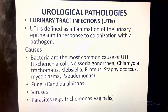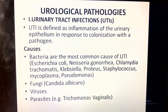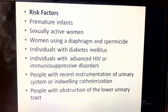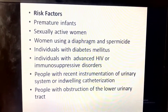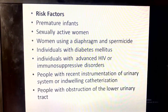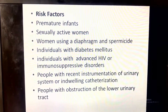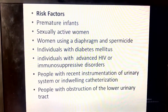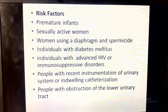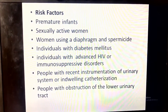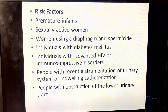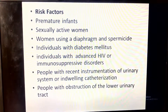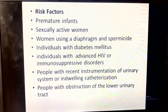A common parasite is Trichomonas vaginalis, which can cause urinary tract infection. What are the risk factors for urinary tract infection? These include premature infants, sexually active women, women with multiple partners, sex workers, women using a diaphragm and spermicide, those with diabetes mellitus, and those with advanced HIV or immunosuppressive disorders.